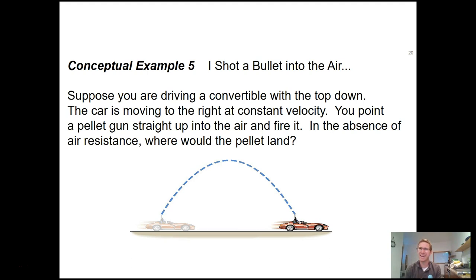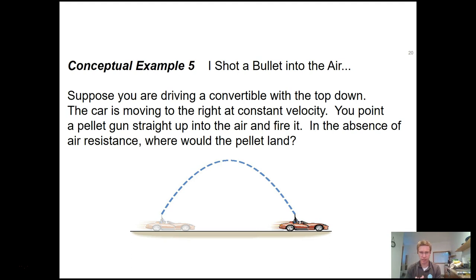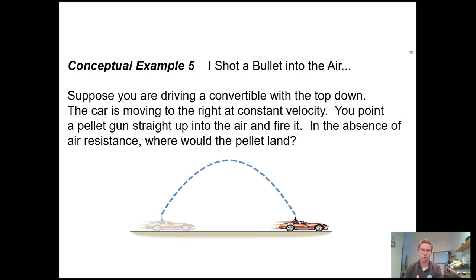Amy, any guesses? I'm not participating anymore. I'll just tell you: it will land, contrary to popular belief, right back in the barrel of the gun. The moment you launched it, while you launched it straight up relative to the gun, it has the same forward velocity as the vehicle — 50 miles an hour. Ignoring air resistance, as the car moves forward, the pellet continues to move forward, landing back in the car.